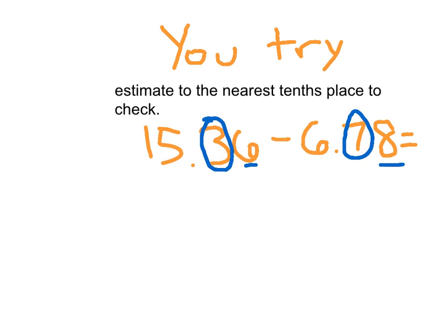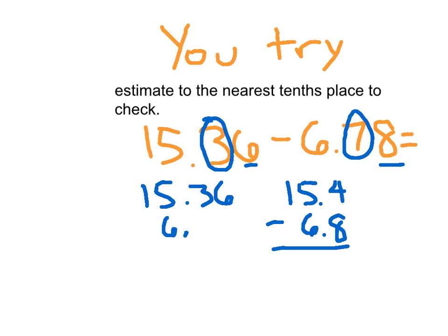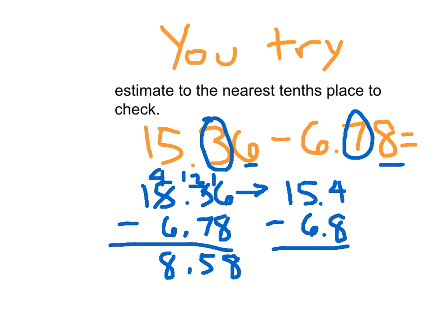For my estimate, it would have been 15.4 minus 6.8. Now my exact was 15.36 minus 6.78, lining up those decimal places. This lesson's focused more on the rounding part as well as the estimate. So my exact answer is 8.58.